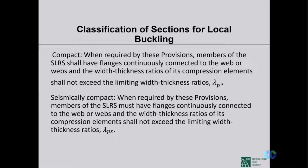Seismically compact sections are more stringent than ordinary compact sections. While compact sections require width-thickness ratios less than lambda_p, seismically compact sections require them to be less than lambda_ps (lambda_p seismic). This ensures members will definitely yield without inelastic local buckling, providing greater conservatism for seismic performance.